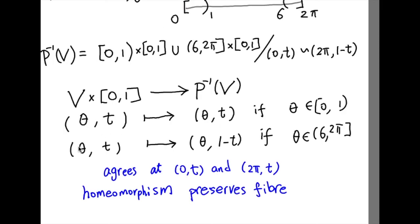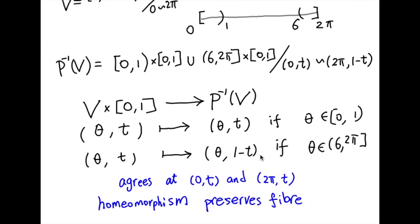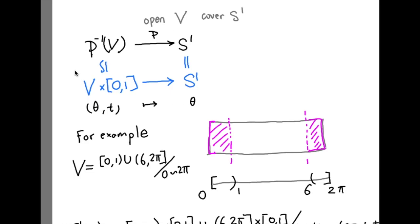We can check, when you have (0, t) and (2π, t), they are supposed to be the same point on the left side, and they are indeed mapped to the same point on the right side. So it is well defined. And you can check it is a homeomorphism and it preserves fiber. Preserving fiber just means that this diagram commutes.